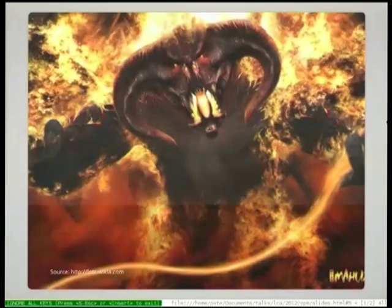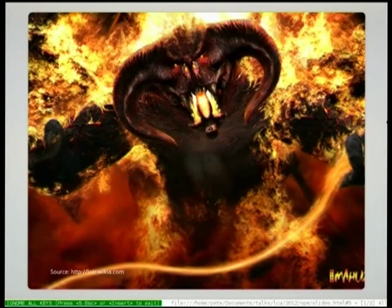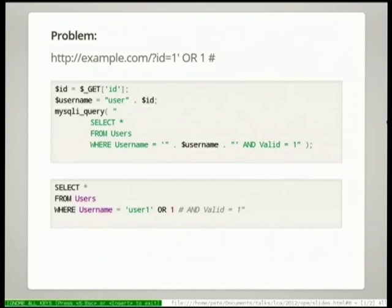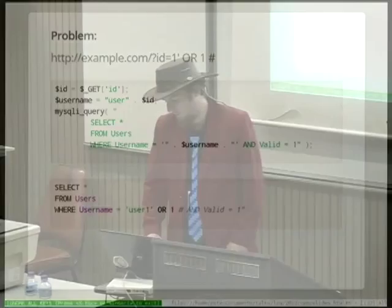I'm sure you all guess the correct answer is a balrog comes and destroys your program. What happens is we have this input — this is so similar to Adam's talk. You get your input and the query turns from a nice query that says please give me a valid user with this username, to please give me this user or any other user, and don't worry about that valid bit anymore because we've commented out the rest of the query.